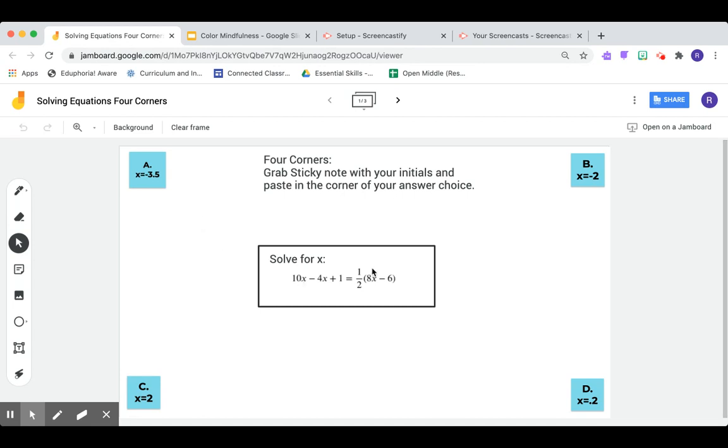So in Google Jamboard, you can add a shape using the circle tool here on the left. Just click it, expand it, and it will bring out your other tools. That's how I made the box in the middle.